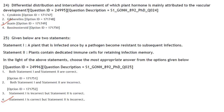Given two statements: Statement 1 — A plant infected once by a pathogen becomes resistant to subsequent infections. Statement 2 — Plants contain dedicated immune cells for retaining infection memory. Statement 1 only is correct; statement 2 is not correct. Answer is option 4.